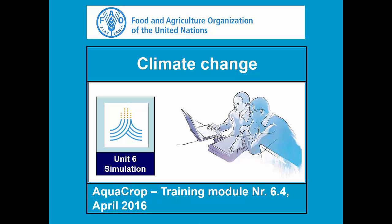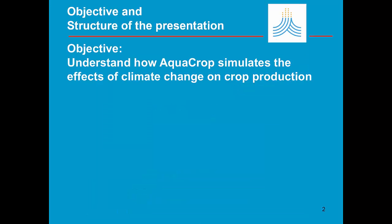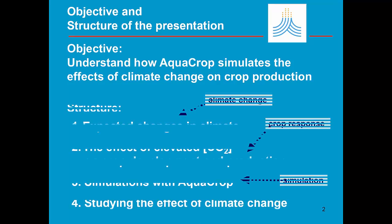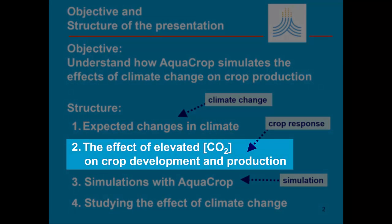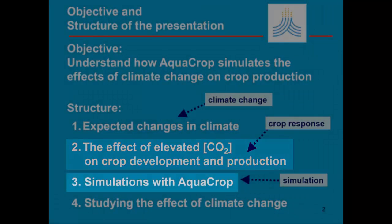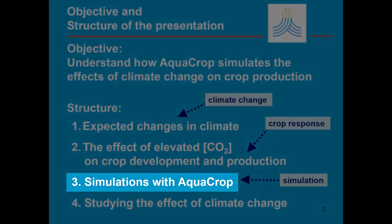Training Module 6.4: Climate Changes. The objective of this module is to understand how AquaCrop simulates the effect of climate change on crop production. First we will discuss the expected changes in the climate, then the effect of elevated CO2 concentration on crop development and production, and finally we will show some simulations with AquaCrop.